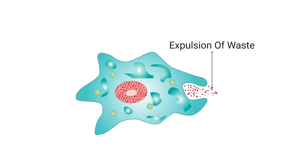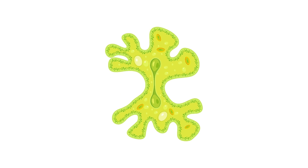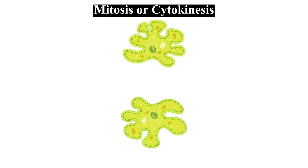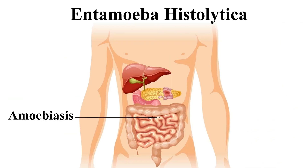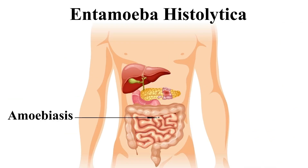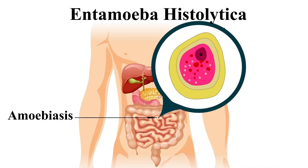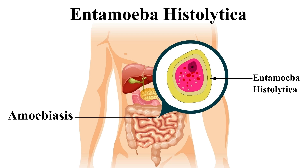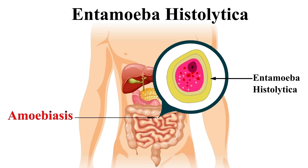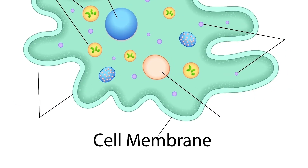The process of excretion and removal of waste is done through the contractile vacuole. Amoebas reproduce by dividing into two cells, asexually either by mitosis or cytokinesis. Some amoebas are parasitic, thereby causing harm to humans and animals — for example, Entamoeba histolytica causes amoebiasis.